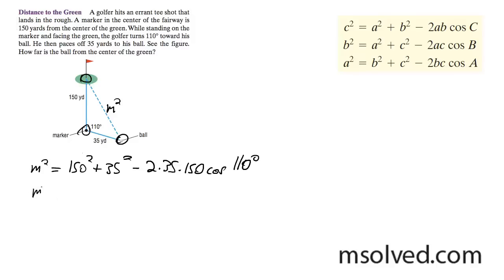So this becomes m squared is equal to, what do I have for those? All together, it's going to end up being 27316.2115.